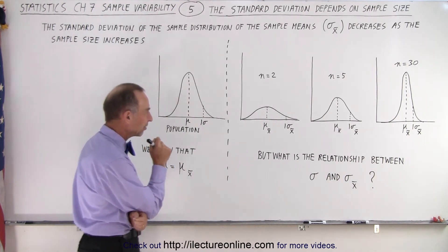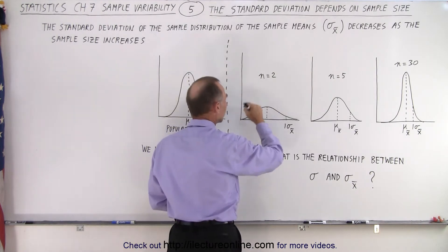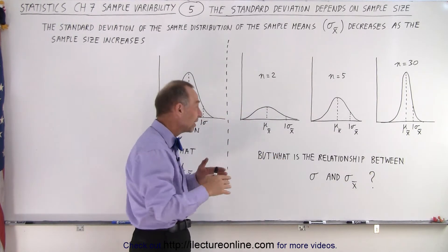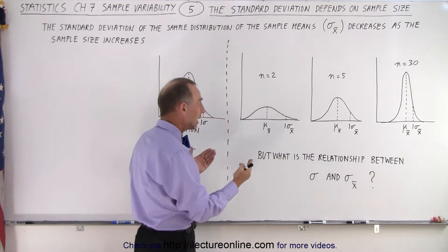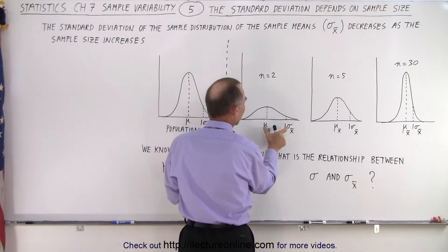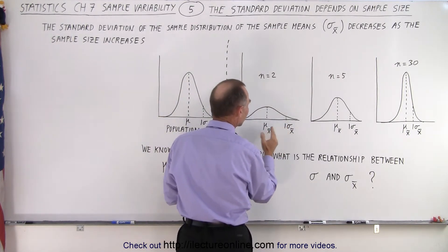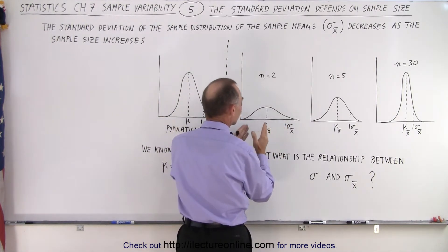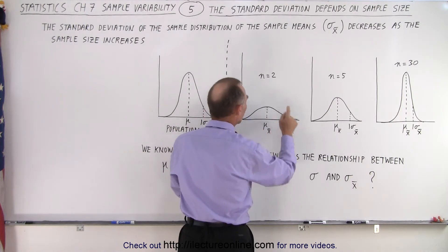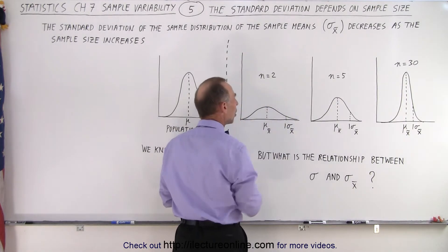When the sample size is small, we don't really have a normal distribution, but if we do it is spread out and the standard deviation is far away from the mean. In other words, the standard deviation is large when the sample size is small.